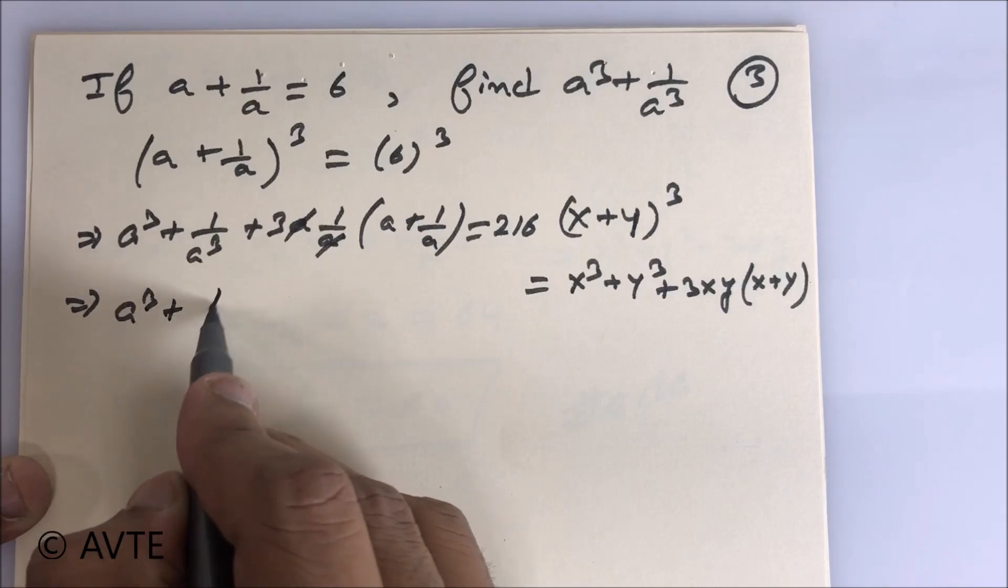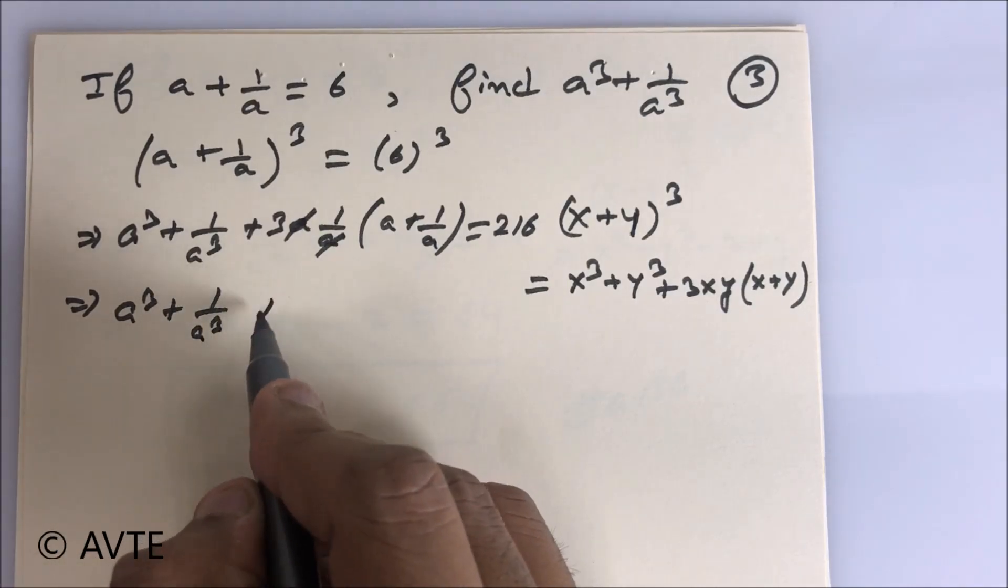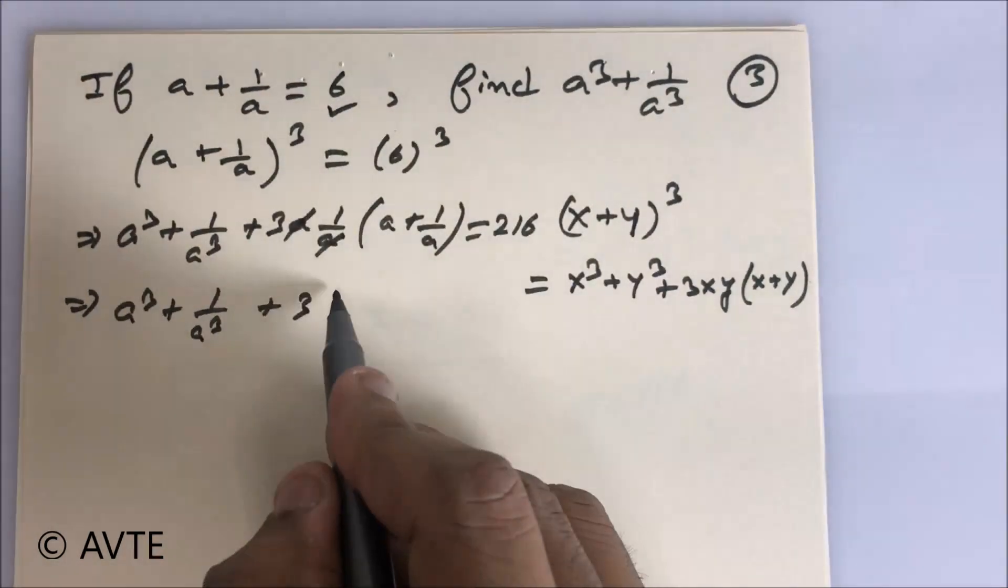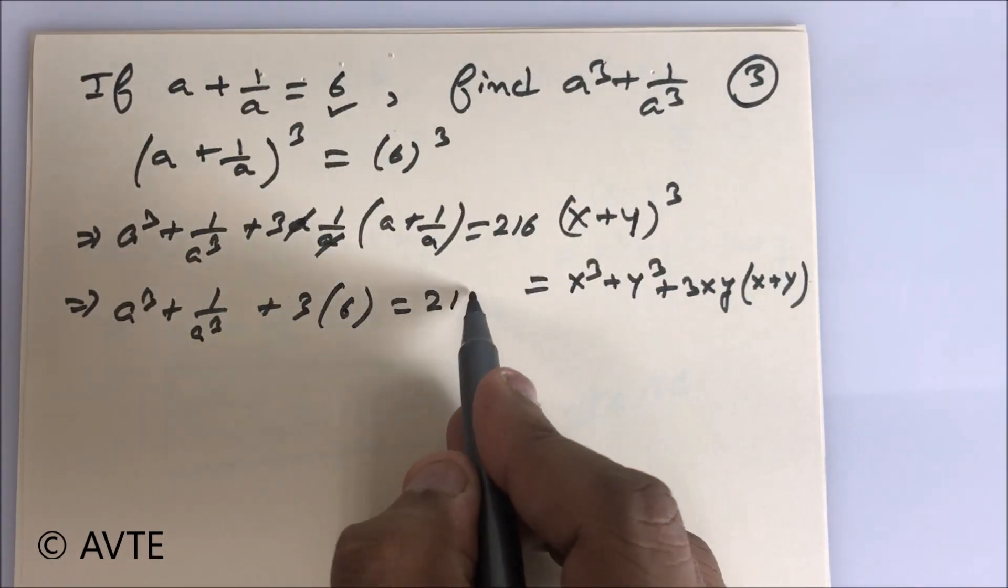This is a³ plus 1/a³ plus 3, and what is the value of a plus 1/a? That is 6, is equal to 216.